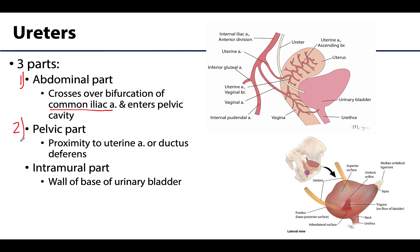The pelvic part, as its name suggests, is in the pelvic cavity. As this is a relatively complex and crowded area, it has close geographical relationships with many structures. Of most clinical importance, it is very closely related to the uterine artery on its course to the bladder — you can see that here near the uterine cervix. It also has a close relationship to the ductus deferens and the seminal vesicles, located near the base of the bladder. The last portion is the intramural part, where the ureter runs within the wall of the urinary bladder at its base — this is the narrowest part of the ureter.